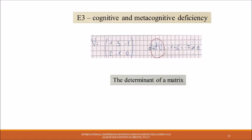Cognitive and metacognitive deficiency—also in this kind of error can be caused by construction of conceptual nodes lacking from definition, the determinant of matrix. This is not a square matrix.